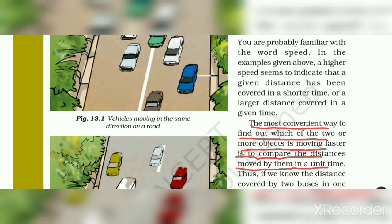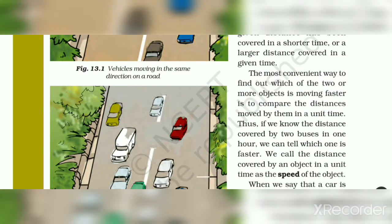So, in unit time, if two or more objects are moving, the distance moved by them is compared to determine which one is moving faster. So, find out the most convenient way.